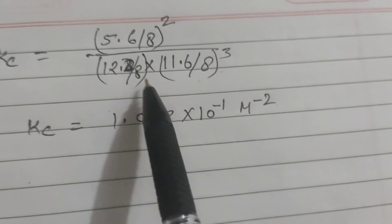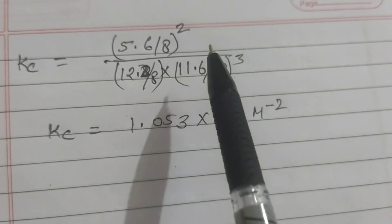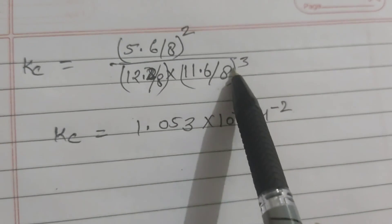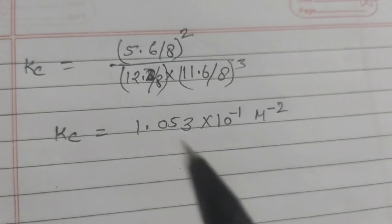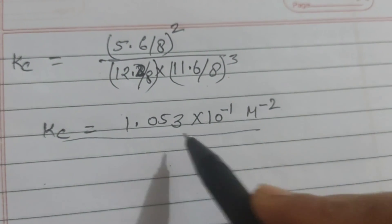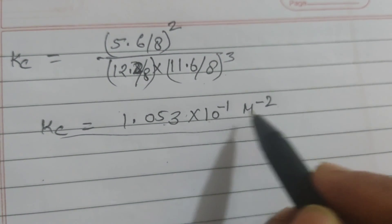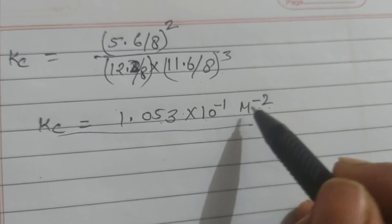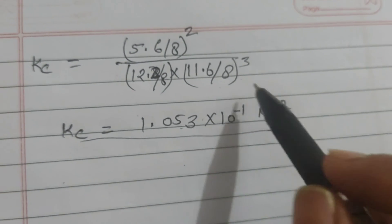If you will calculate it, you can calculate yourself dear students. You can use calculator and you will find approximately the answer 1.053 times 10 to power minus 1, liter squared per mole squared. This is the unit of Kc.